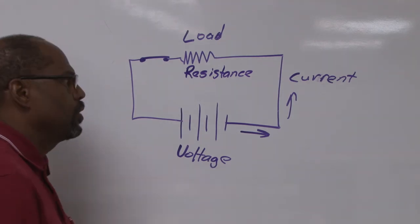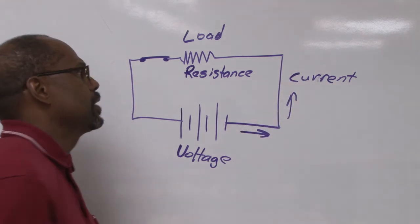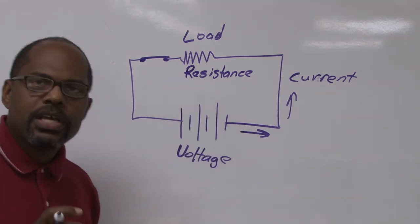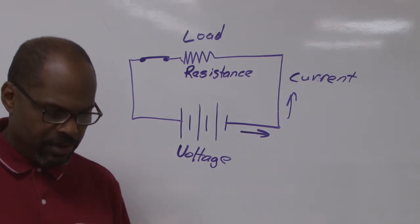Voltage is the force. Current is the movement and the speed or velocity. And resistance is the impedance or slowing down of current flow.